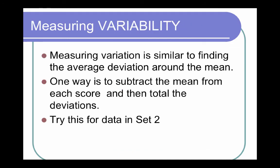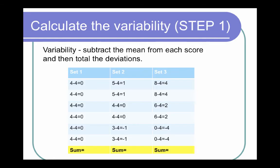So how do you measure variability? Measuring variation or variability is similar to finding the average deviation around the mean. Think about that, the average deviation. One way is to subtract the mean from every score and then total the deviations. So let's do this for the data in set two. You take the first number, that was a four, and you're going to subtract the mean, and then total up the variations or the deviations. So we're going to add this column here. We need another drumroll, what did you get? Zero for every one of them. So when you subtract the mean from each score and then total the deviations, you're going to get zero, which is not particularly helpful.